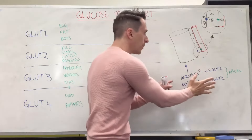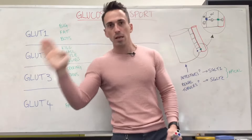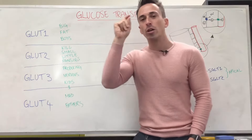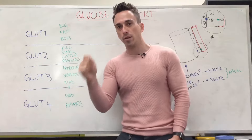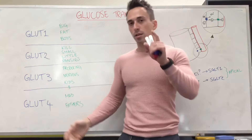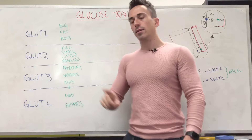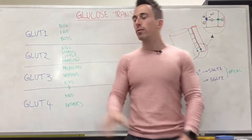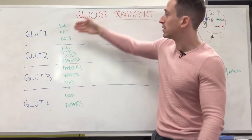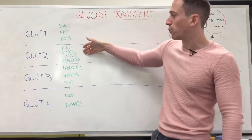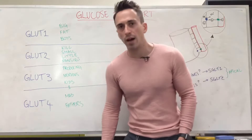So we've spoken about the SGLTs. Let's now talk about the GLUTs — this is how we get glucose into specific tissues of the body. There are four GLUTs you need to know, and different tissues where these GLUTs are located. How do you remember it? Through my mnemonic: 'big fat boys kill small little pansies, producing nervous kids and mad fathers.'